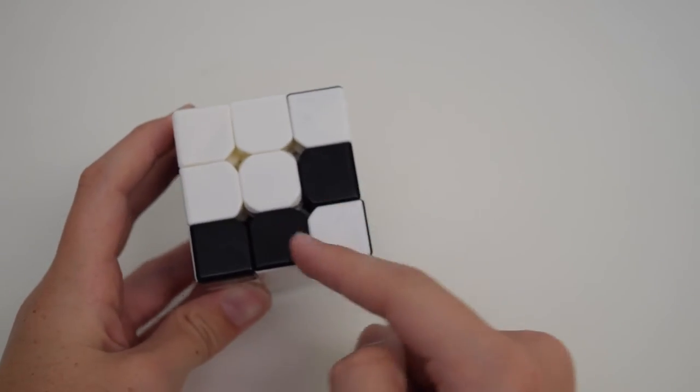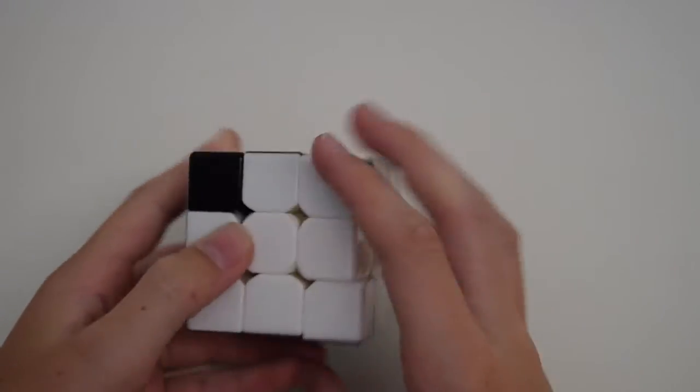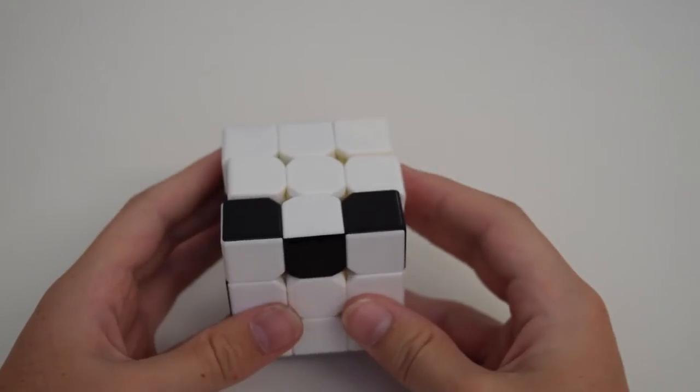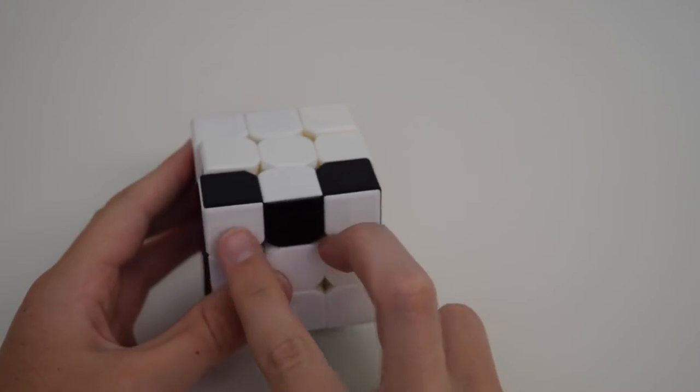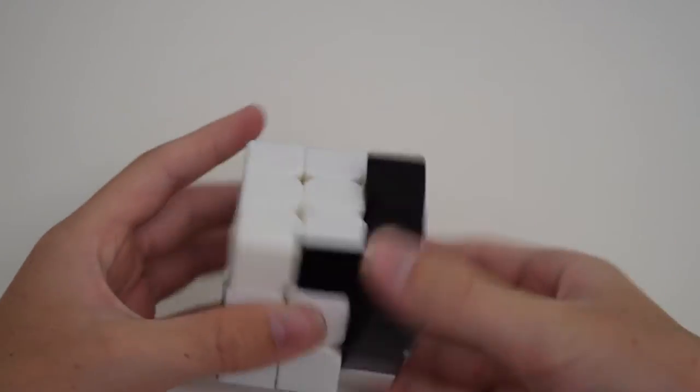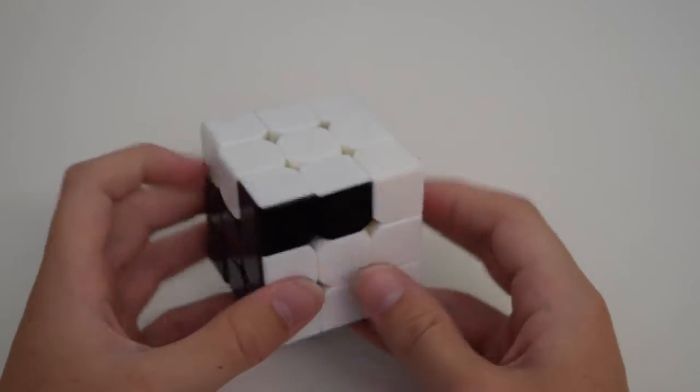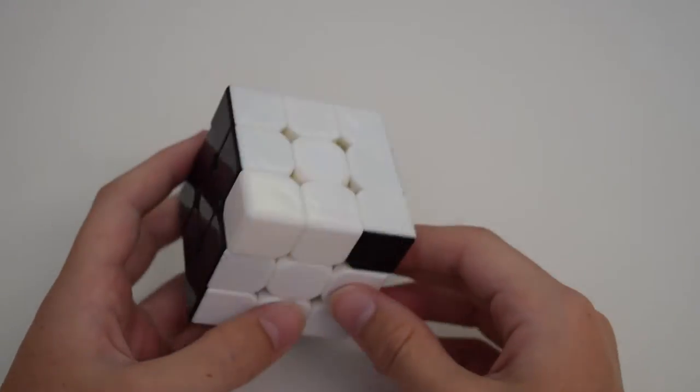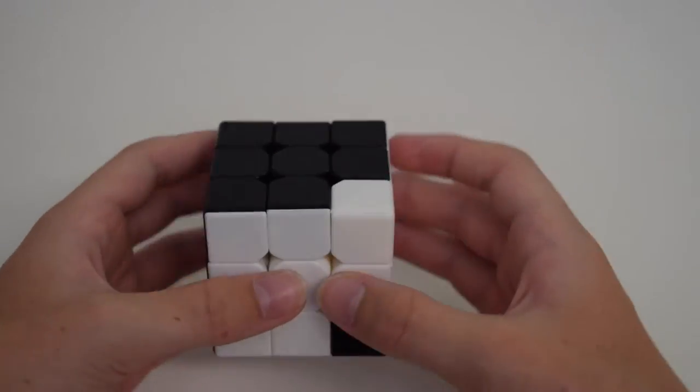We know that the last layer is going to be completely white, so we can apply a simple algorithm to flip these two pieces. We can do the same for the corners. And now we just have PLL. This looks like an NB perm, so I'll apply that algorithm.